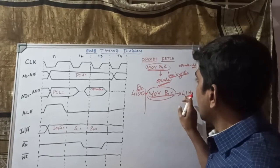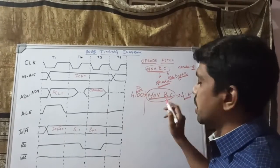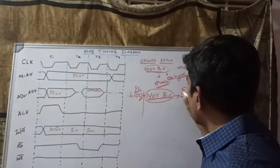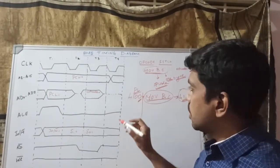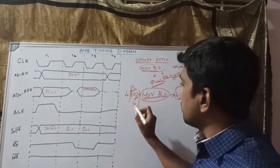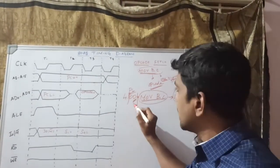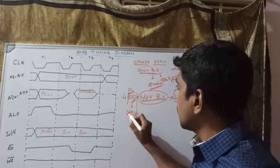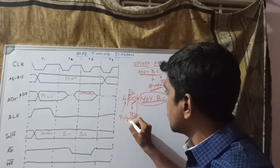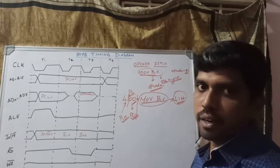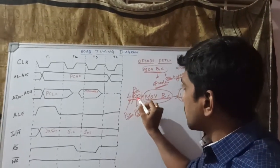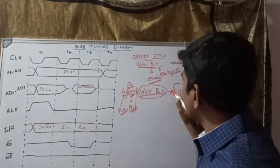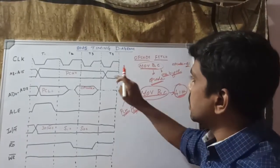The 41H is the opcode of the specified instruction MOV B, C. In the timing diagram, mention the program counter value and also the opcode. The program counter value is 16-bit, split into two 8-bit values. 00H represents PCL — the program counter low order address. 41H represents PCH — the program counter higher order address. The 41H is the opcode data present at that memory location.